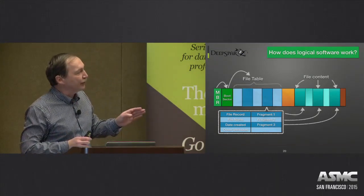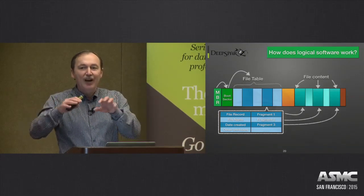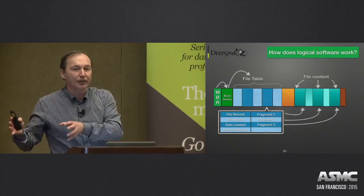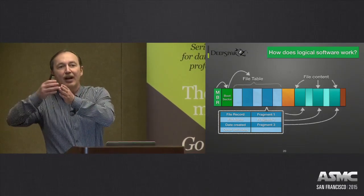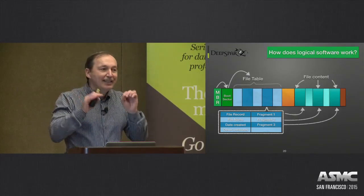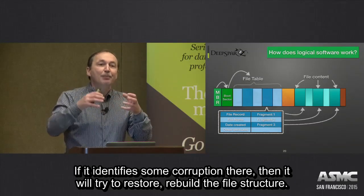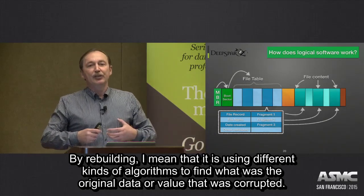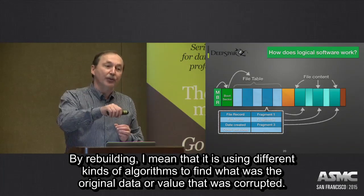This is basically just the file system structure of any general-purpose file system. So what logical software does: it follows all these steps and validates whether every single element in this link is corrupted or not. It checks whether MBR is okay, whether Boot Sector is fine, then it finds the file table, scans it, and checks every single file record. If it identifies corruption, it will try to restore and rebuild the file structure.